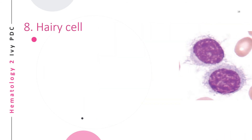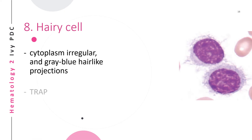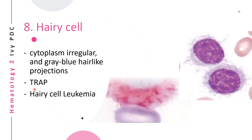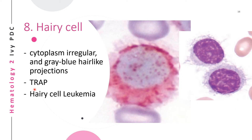The next WBC anomaly is the hairy cell, seen in hairy cell leukemia. It is called a hairy cell because the cytoplasm has irregular, gray-blue hair-like projections extending outwards. When stained with tartrate-resistant acid phosphatase (TRAP), hairy cells show a red granular cytoplasmic staining.